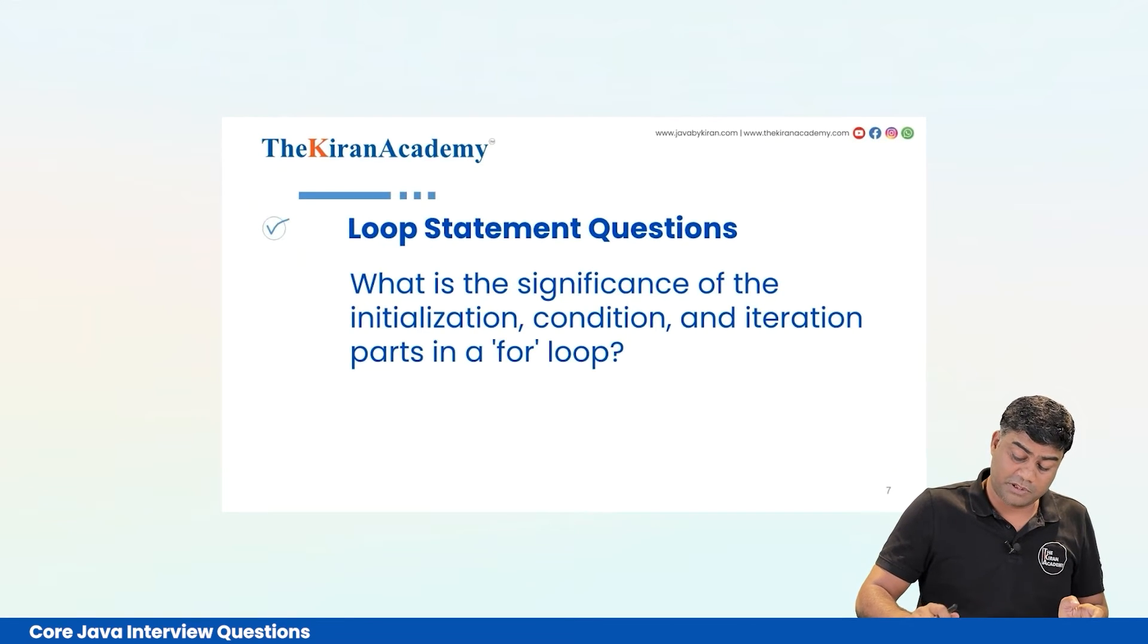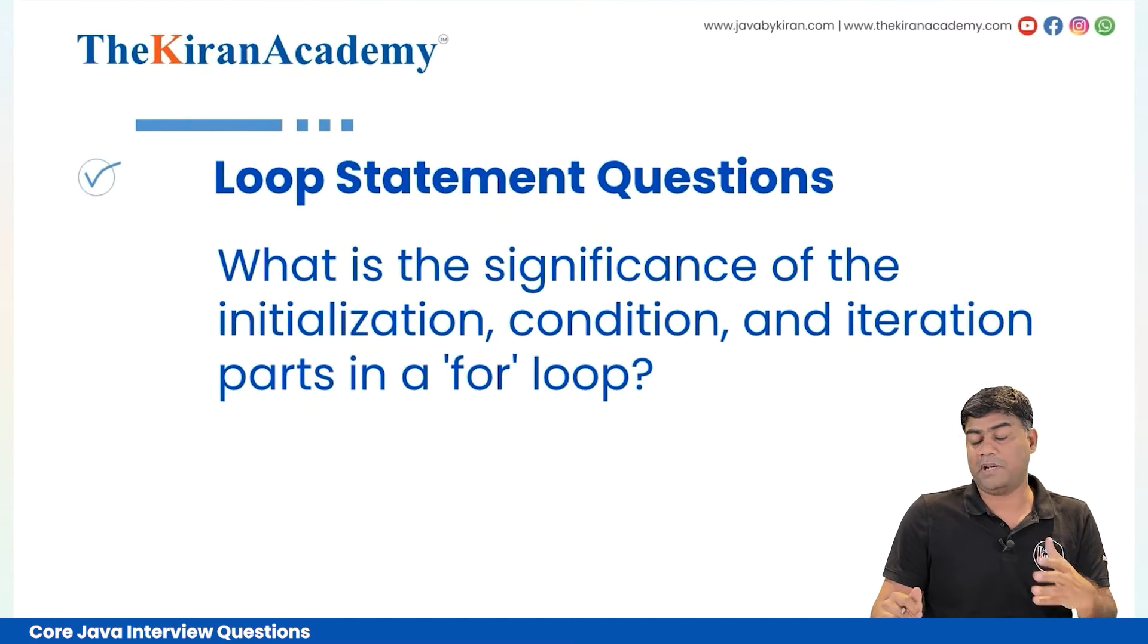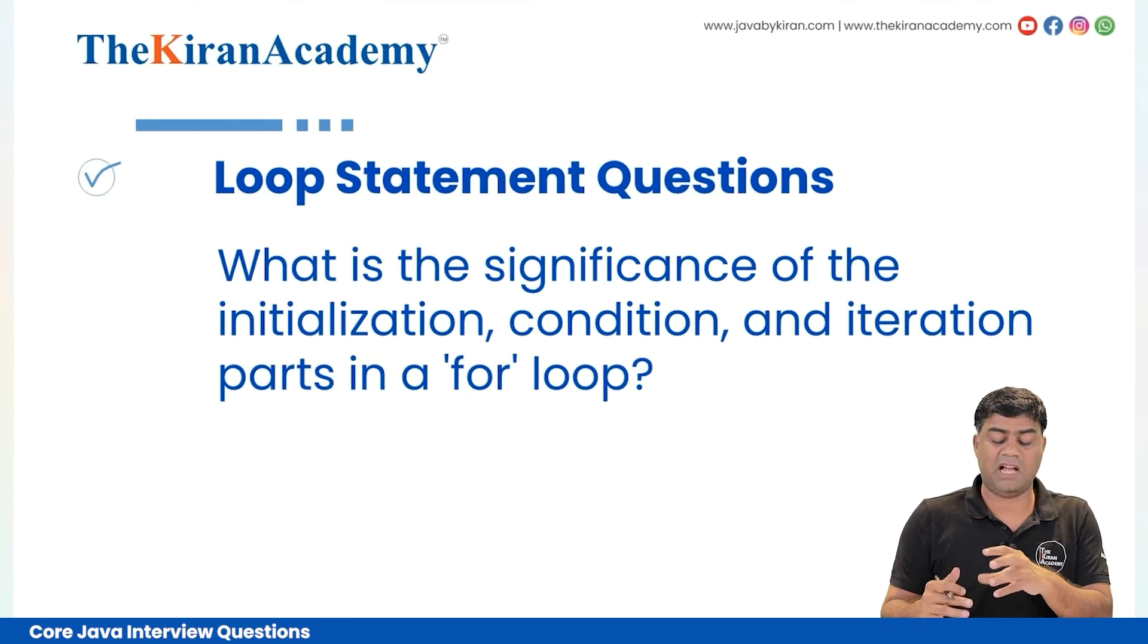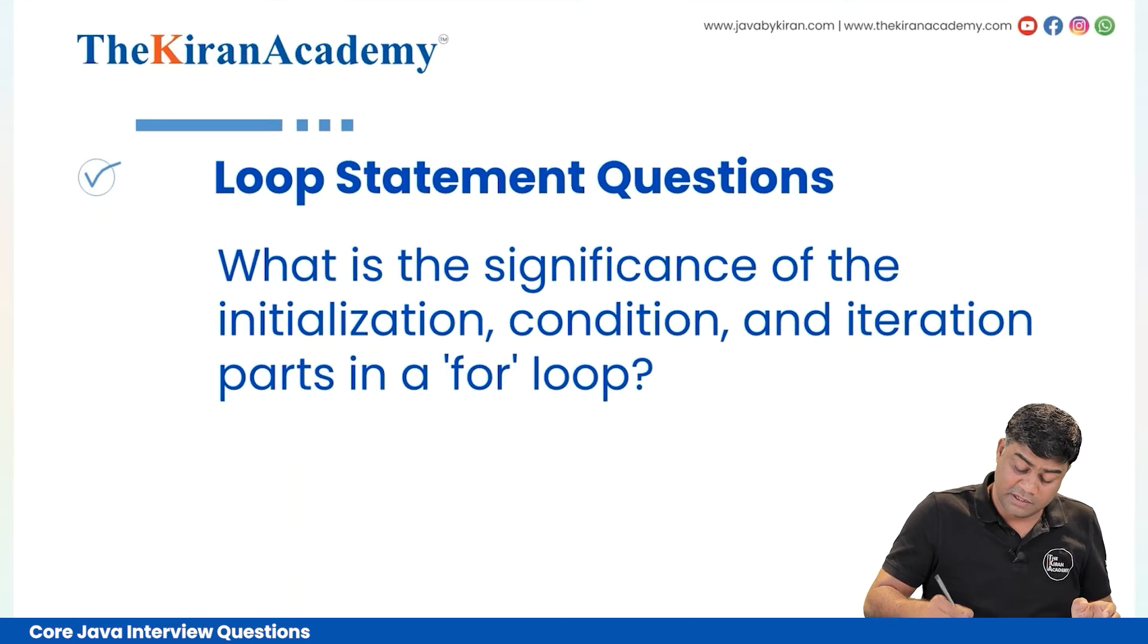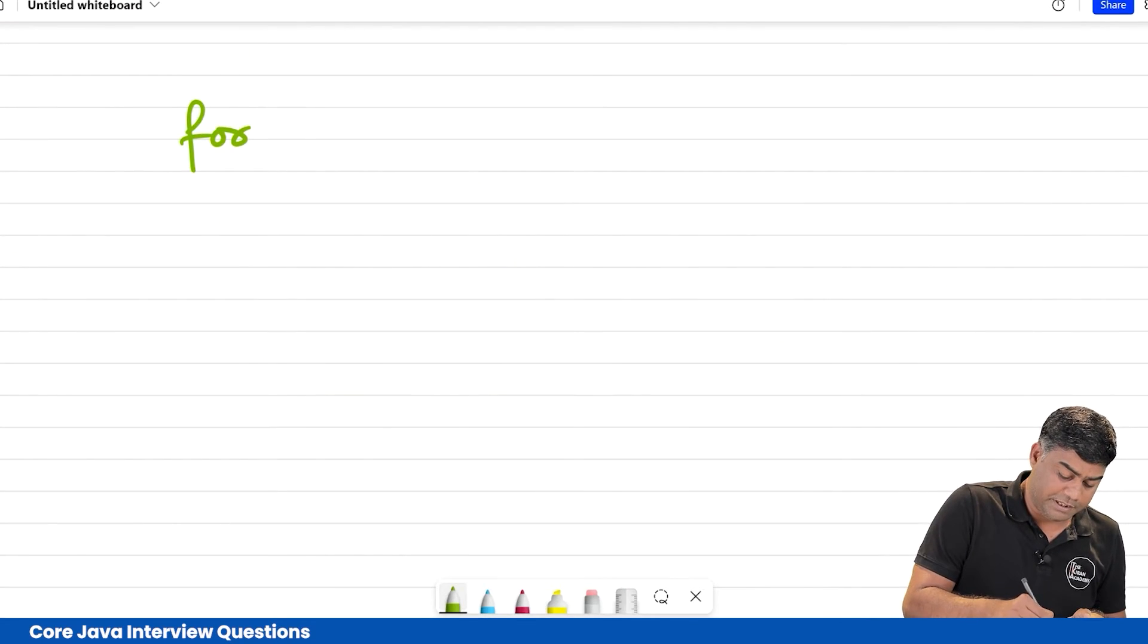What is the significance of the initialization, condition, and iteration parts? I already told if you know iteration, how much you want to iterate, then i plus plus you can write. You can write i equals i plus two also. If you want to have more detail snap of it, I will explain it.